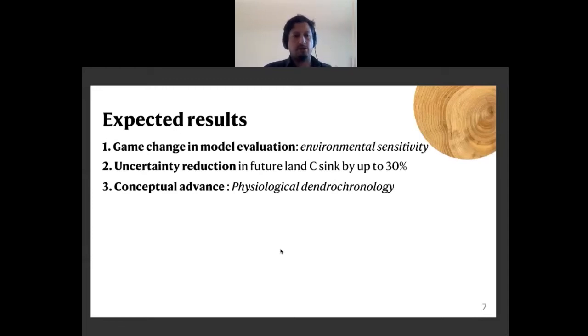This is taking the current evaluation over 30 years to a whole century. This should lead to an uncertainty reduction in the future land carbon sink by up to 30%, contributing to reducing the uncertainties in climate change projections. Finally, the need to interpret tree rings in terms of model processes will lead to a conceptual advance that I will publish as physiological dendrochronology.